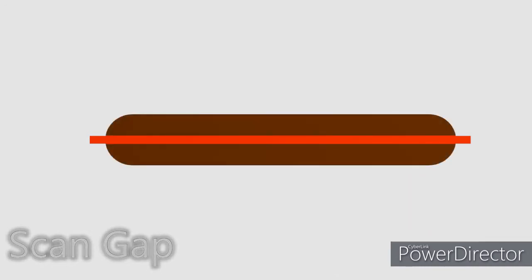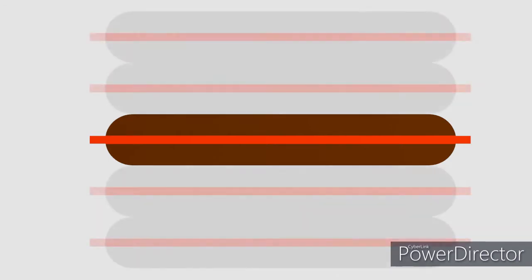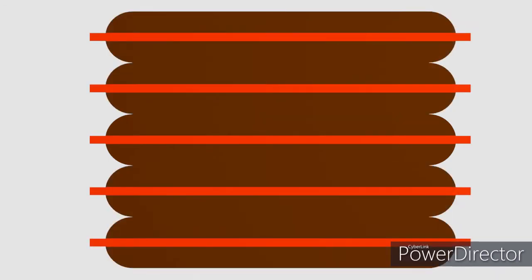When doing a raster engrave, our line is going to have some thickness. We're not just going to engrave one line to do an image — we're going to engrave a series of lines, and these lines need to be spaced apart. The distance that we want the laser to draw the lines apart is determined by the width of the lines, and this is called the scan gap.